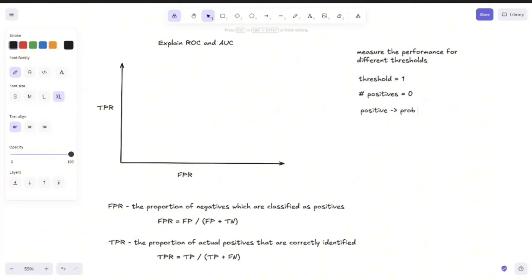And because no probability is higher than 1, we can't label any sample as positive. So both the false positive rate and the true positive rate will be equal to 0. And if we were to plot this point on this graph, it will be just here, at 0, 0.